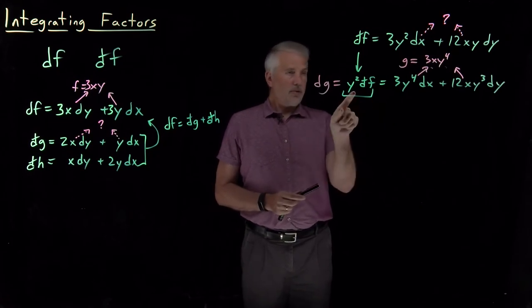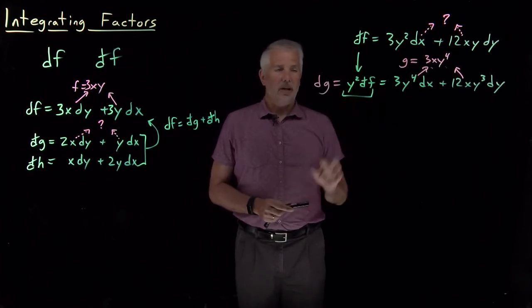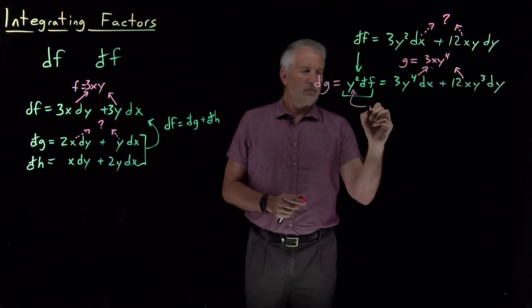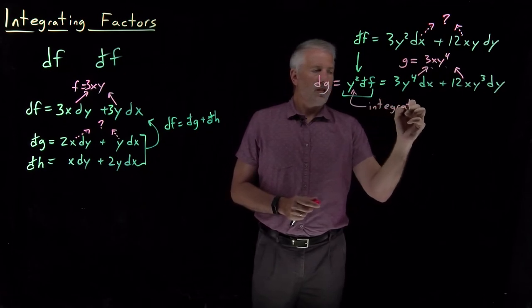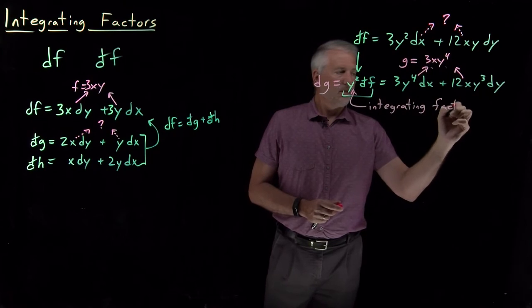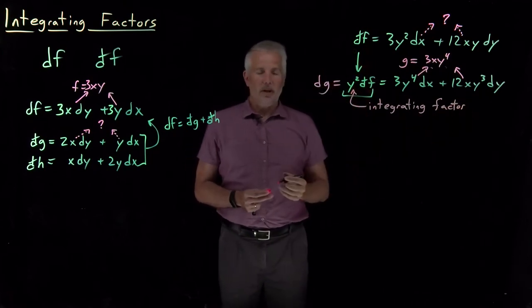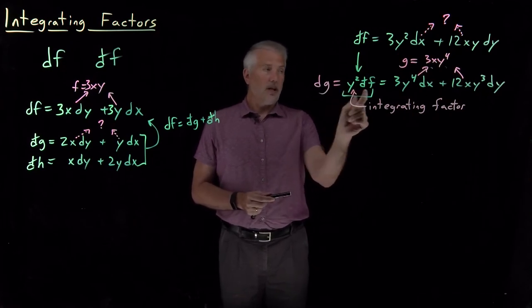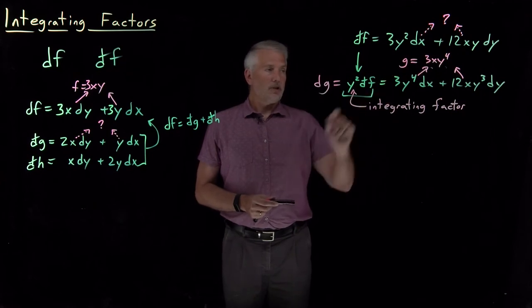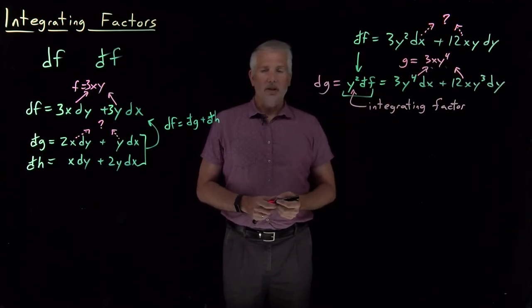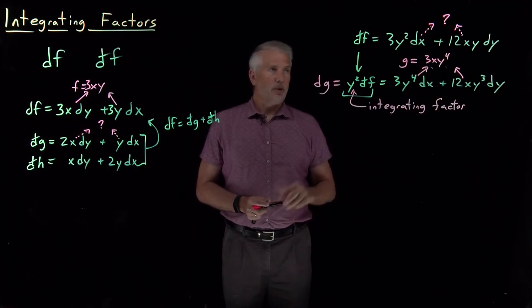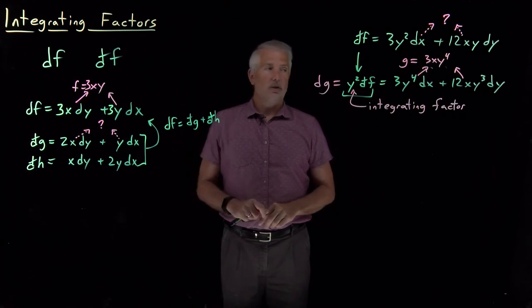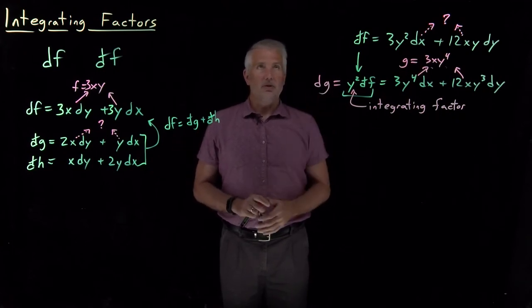So after multiplying my inexact differential by y squared, I can turn it into an exact differential. So that's a useful trick. In this particular case, what we say is that we've used an integrating factor. If I multiply my inexact differential by y squared, by an integrating factor of y squared, basically what that does is I've used a factor that allows me to integrate it back up to a function g. So y squared is the integrating factor in this particular case. So that's another useful trick when you have an inexact differential. You can either combine it with another inexact differential to make it exact, or sometimes you can multiply it by something to turn it into an exact differential.